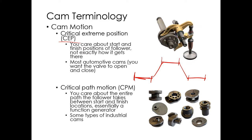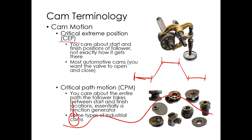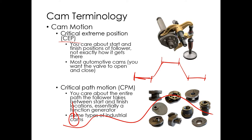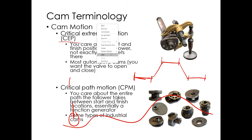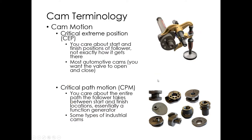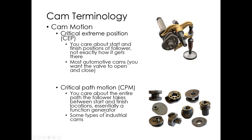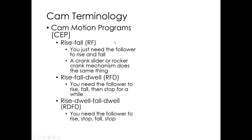Critical path motion is different — you care about everything in between the extremes. You have a very specific profile the follower must follow. You see this a lot in industrial cams for manufacturing processes. A duplicator lathe is a good example: it has a cam shaped like the part you're going to machine, and you run a tool over the cam profile to duplicate it. We'll mainly talk about critical extreme position in this class; critical path motion is less mathematically involved — you know the path, wrap it in a circle, and make the cam.